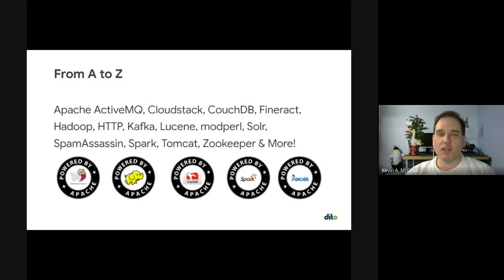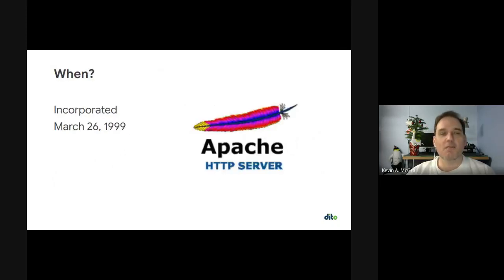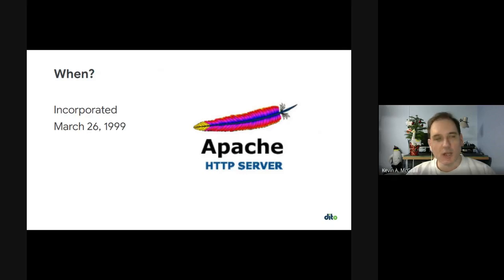We have hundreds of projects — currently at 386 projects under our umbrella. It's everything from A to Z: ActiveMQ all the way to Zookeeper. Projects like SpamAssassin, Hadoop, Kafka, and MXNet, like we're talking about today. We're just over 21 years old; in March of next year, we'll turn 22, so we're now legal to drink in the US. We're very proud that over the last 21 years, we've really changed the way people compute.